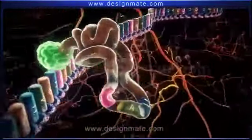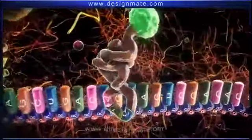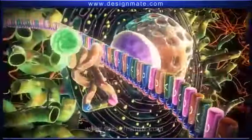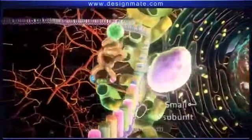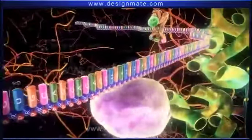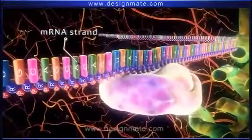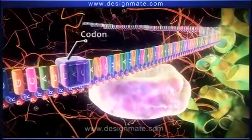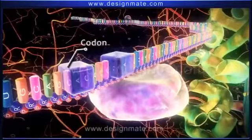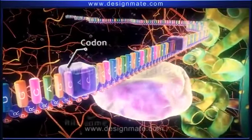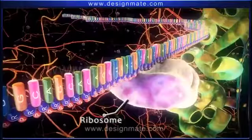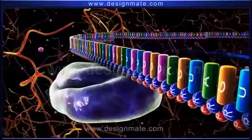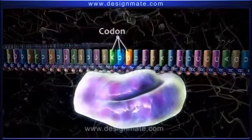This marks the commencement of the first stage of protein synthesis, the initiation stage. During the initiation stage, a small subunit of a ribosome binds to the mRNA strand. The mRNA strand is made up of codons, which are sequences of three bases. Then the ribosome subunit moves along the mRNA in the 5' to 3' direction until it recognizes the AUG codon, or the initiation codon.